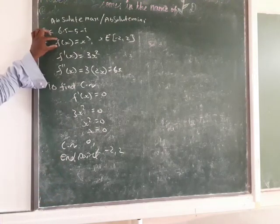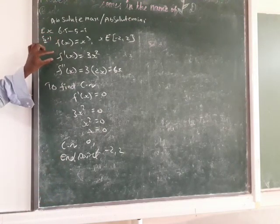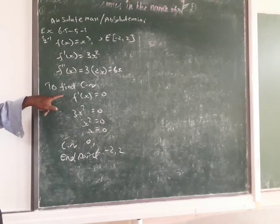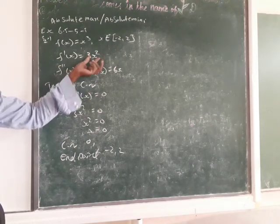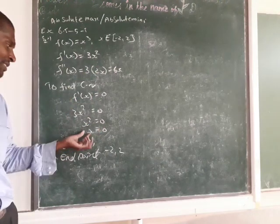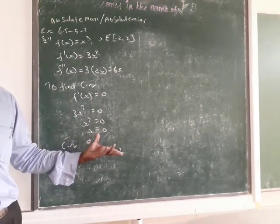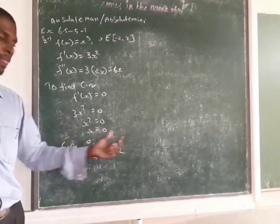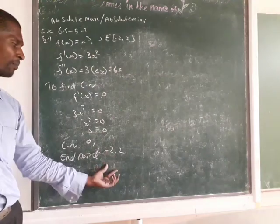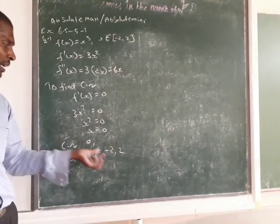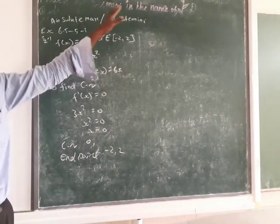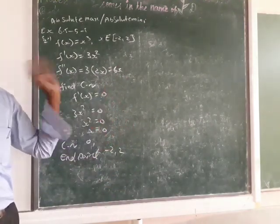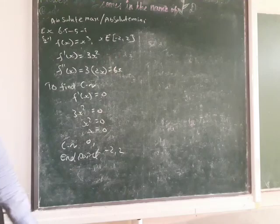So first you find f of x and differentiate two times: f dash of x and f double dash of x. To find the critical number, substitute f dash of x equal to 0 and find the x value. Sometimes the x value will give 1, 2, or 3 numbers — collect all critical numbers. Then write the end points, substitute the critical numbers and end points in f of x, compare all the values, and which is the maximum is the absolute maximum, which is the minimum is the absolute minimum.